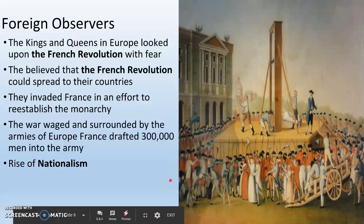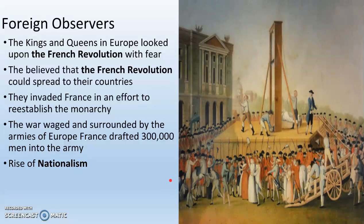The kings and queens in Europe looked upon the French Revolution with fear. They believed the French Revolution could spread to their own countries. They thought: this king just got beheaded by his own people — this Enlightenment thing is scary. So they all band together and invade France in an effort to reestablish the monarchy. Even though they don't like Louis XVI and the Bourbons very much, they like the king much more than the commoners — and they're worried about their own commoners at home. So this is why they invade France.